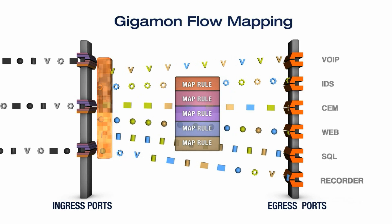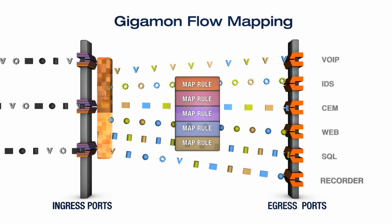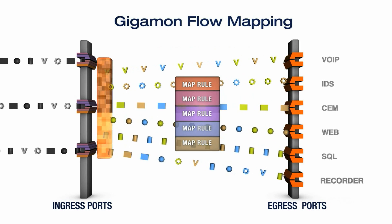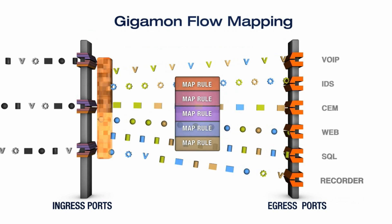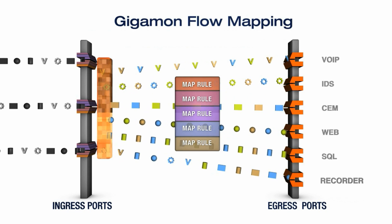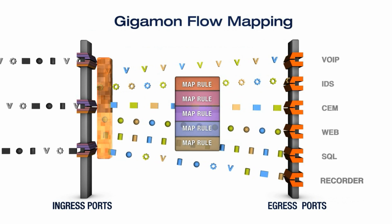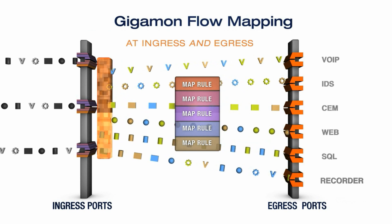Flow maps are hardware based and can perform pattern matching at predefined offsets. Flow mapping technology is sophisticated traffic distribution management and is sometimes described as an intelligent traffic cop.